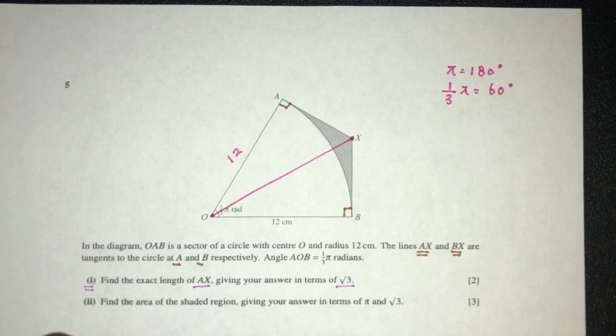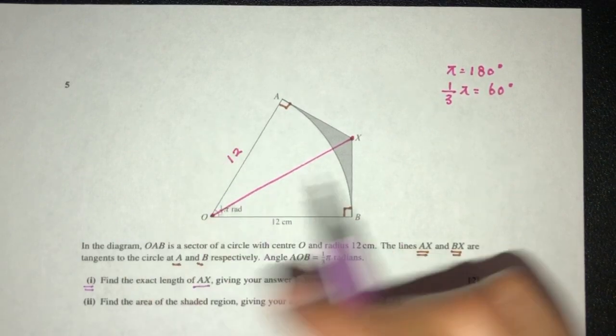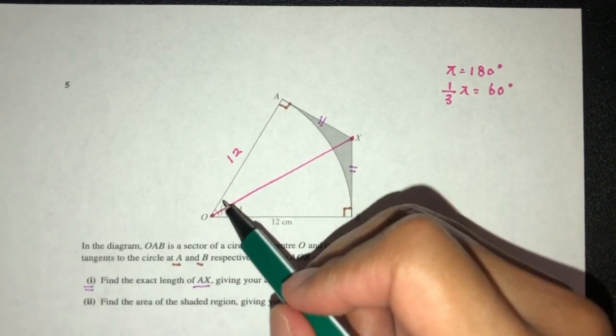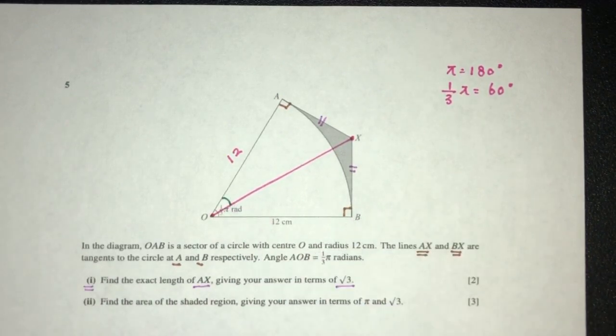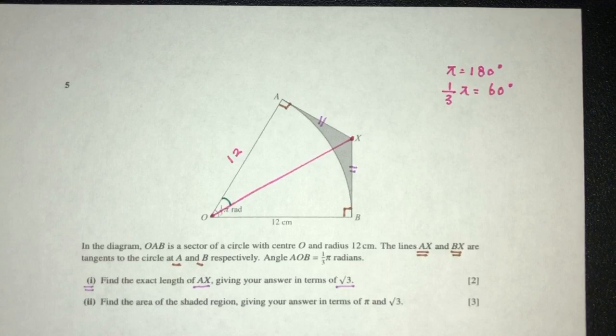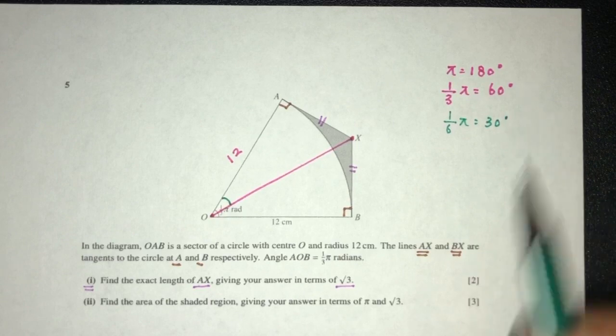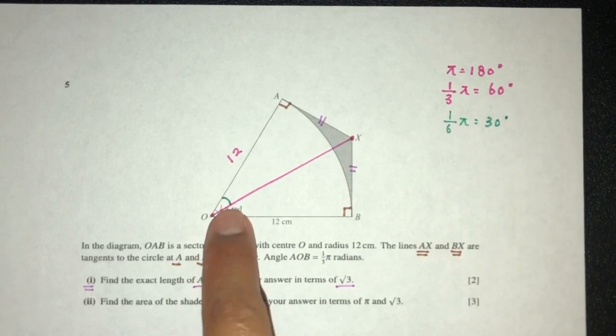Given that both are tangents, this is 12, 12, this also must be the same. Also, this angle right here must be the same. It is exactly half of 1/3 π, which is 1/6 π, which is 30 degrees. That will be the angle right here.